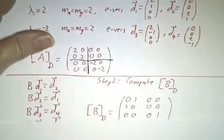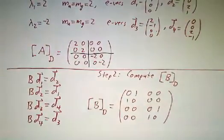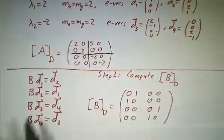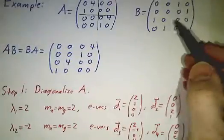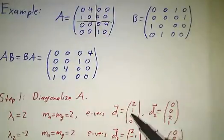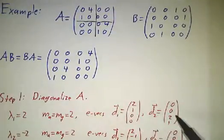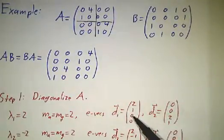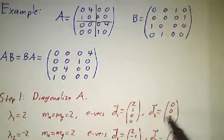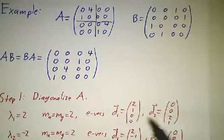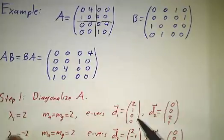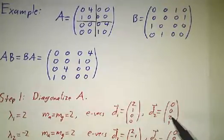The next step is we need to figure out what is B in that basis. So we compute. We compute what is B times D1. You multiply the matrix B times D1 and you discover that you get D2. Well, it has to be something in that linear combination of D1 and D2 because it has to be an eigenvector of A with eigenvalue 2. And it turns out to be exactly D2.